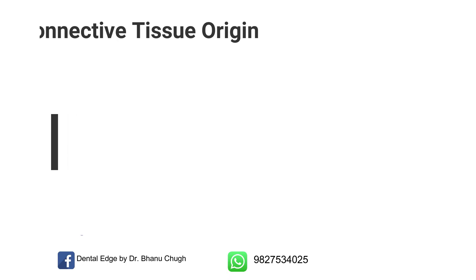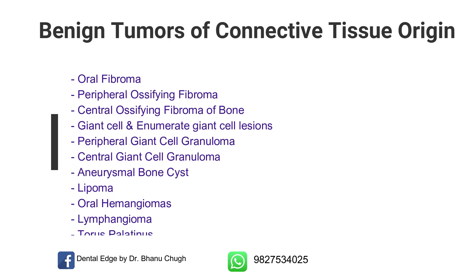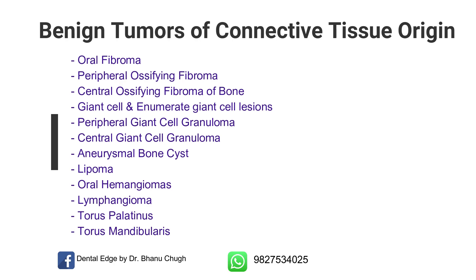Coming to benign tumors of connective tissue origin — in this, common topics are oral fibroma, peripheral ossifying fibroma, and central ossifying fibroma of bone. These two are not very important but you should know about them. You can be asked to write about giant cell lesions and enumerate giant cell lesions: peripheral giant cell granuloma, central giant cell granuloma, aneurysmal bone cyst, lipoma, oral hemangiomas, lymphangioma, torus palatinus, and torus mandibularis.